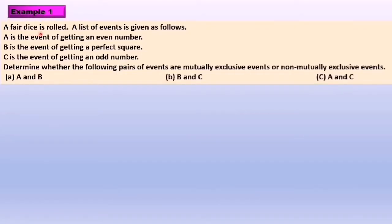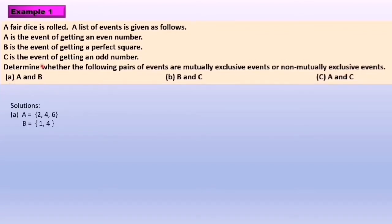Example one: A fair dice is rolled. A list of events is given as follows. A is the event of getting an even number. B is the event of getting a perfect square. C is the event of getting an odd number. Determine whether the following pairs of events are mutually exclusive or non-mutually exclusive. First, A and B. We list out the elements of Set A — the event of getting an even number — so we have 2, 4, and 6.